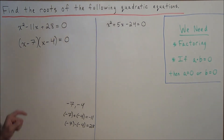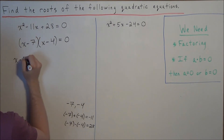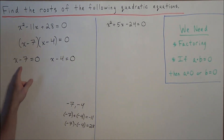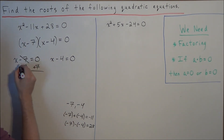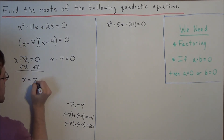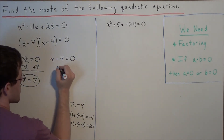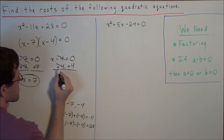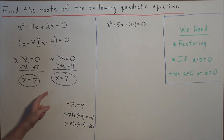The way we connect that to this problem is that we have the product of two terms equal to zero. So this means we have two cases: either x minus 7 is equal to zero, or x minus 4 is equal to zero. Solving case 1, we simply add 7 to both sides, and we get x is equal to positive 7. Now solving the second case, we add 4 to both sides, and we get x is equal to positive 4.